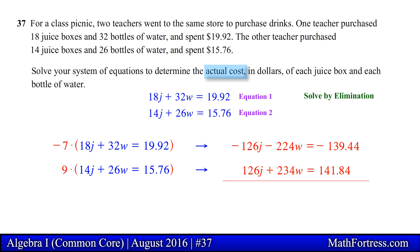Next we go ahead and add the equations together. Notice that the variable j is eliminated, leaving us with an equation with a single variable, in this case w. Solving for w, we obtain 0.24.